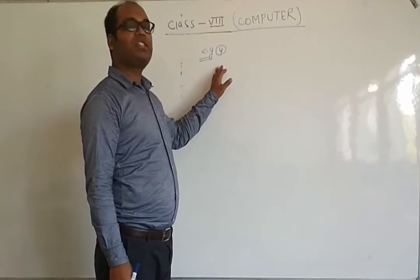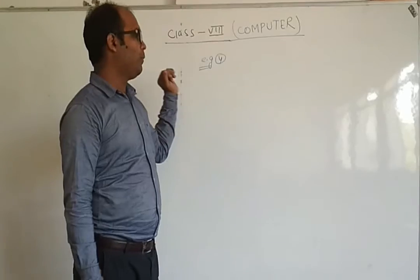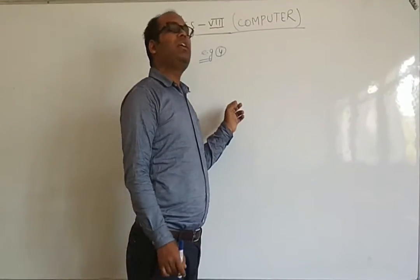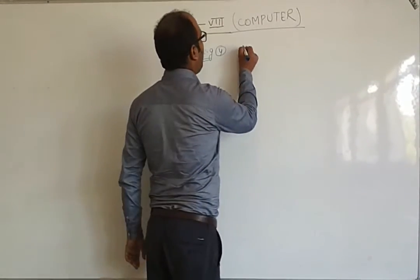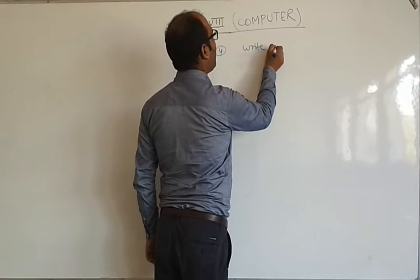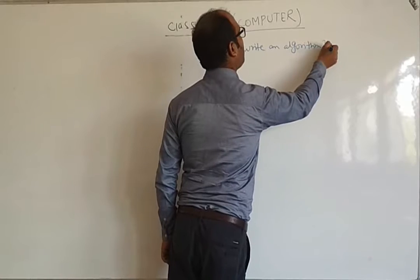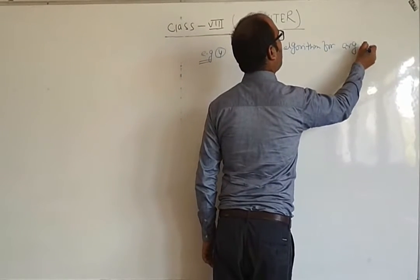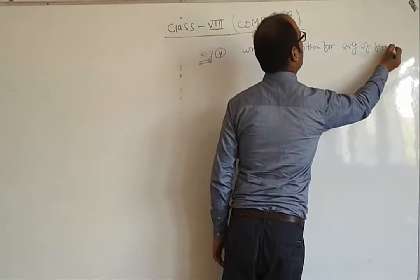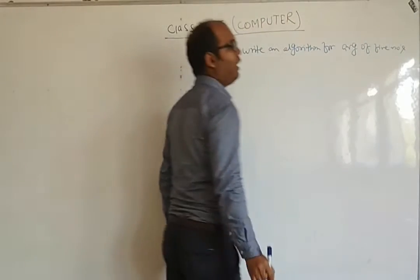Now, so we will discover the next step number of an algorithm. So, next step number is, write an algorithm for average of 5 numbers. Right? So,